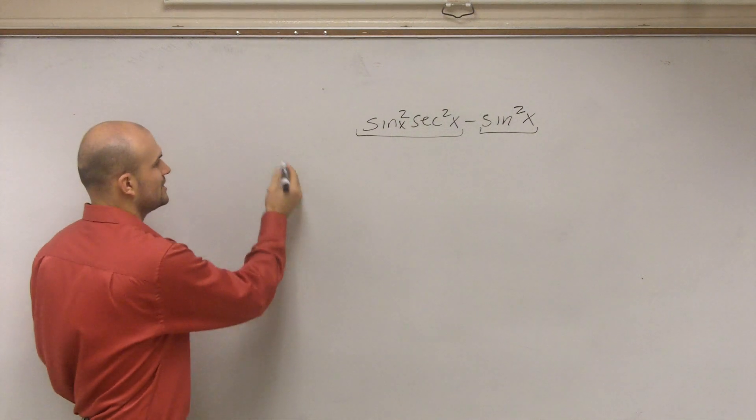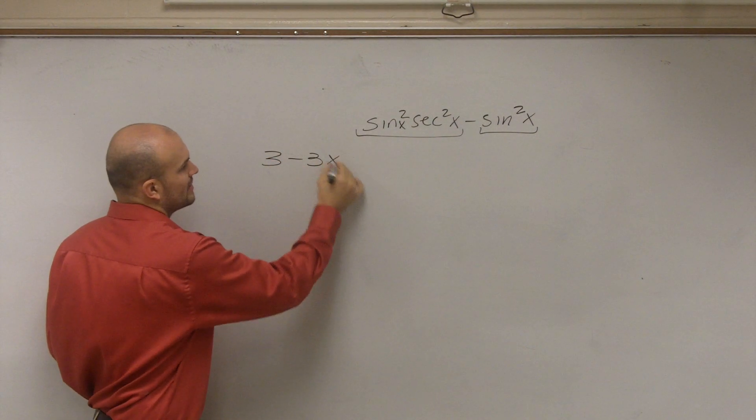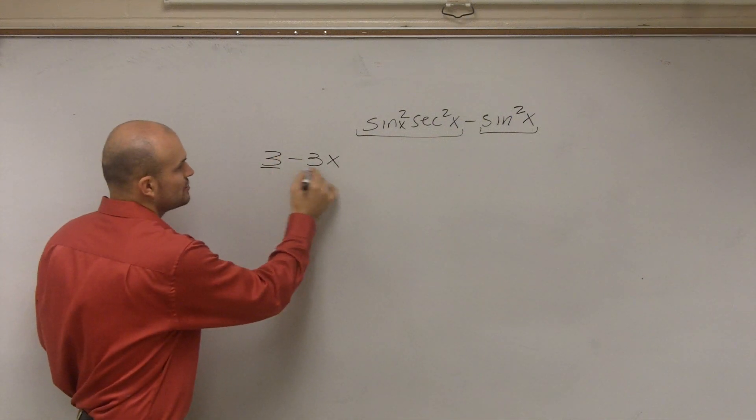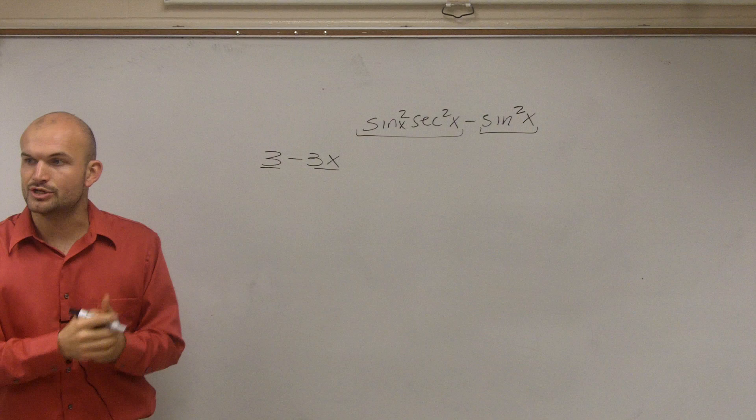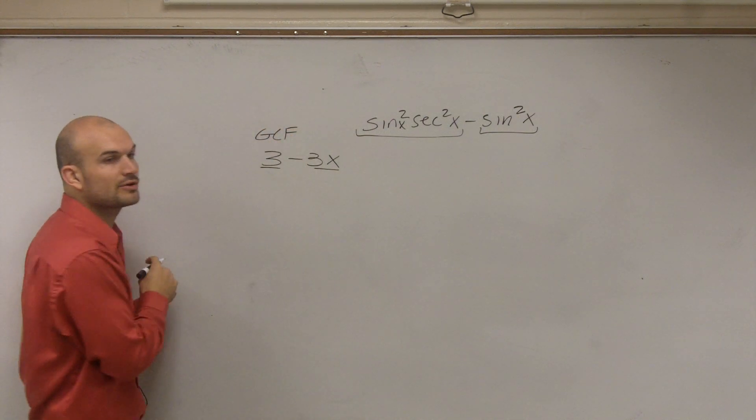Before we answer that question, let's go back through a couple of easier questions. What about if I said 3 minus 3x? So when you first learned to factor, you said, what do these two terms share? You could say they shared a 3, which we wrote as our GCF. Remember greatest common factor?